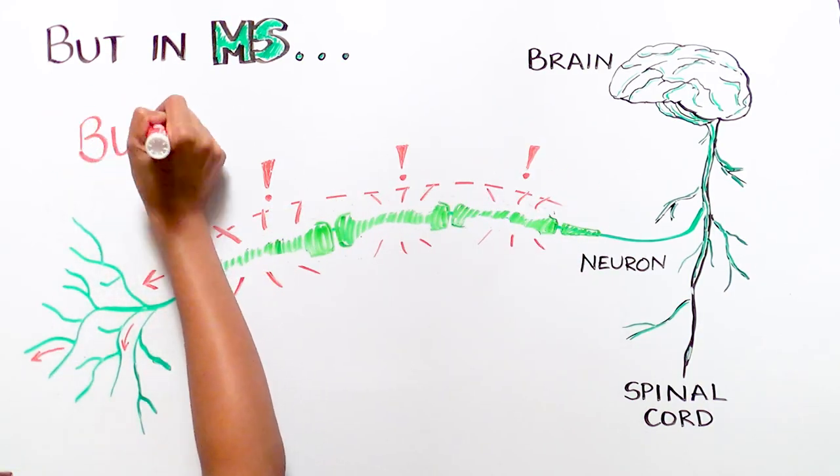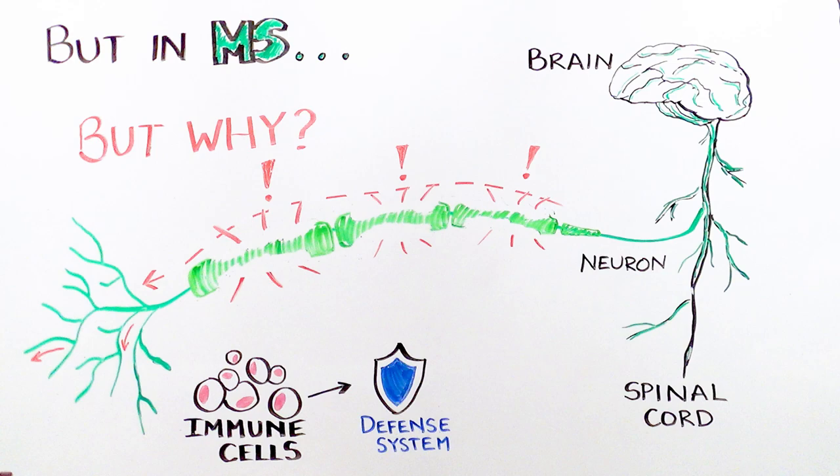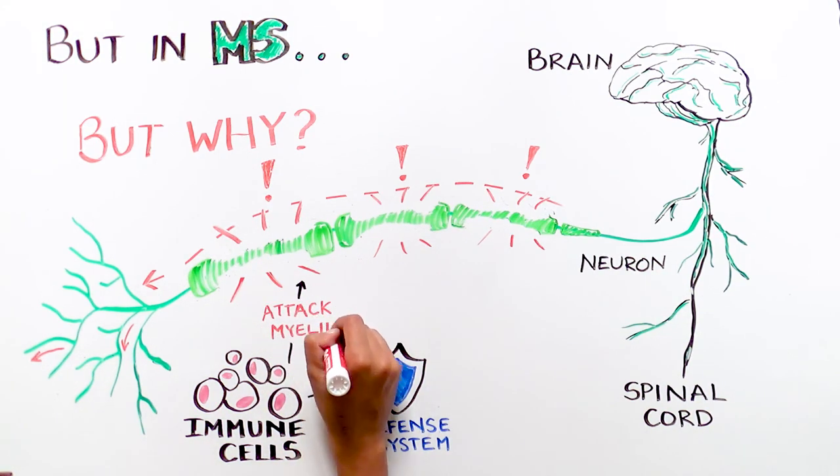Why does this happen? It is mainly due to immune cells. In MS, immune cells go awry, and instead of attacking foreign pathogens, they begin attacking the protective myelin that surrounds the nerves.